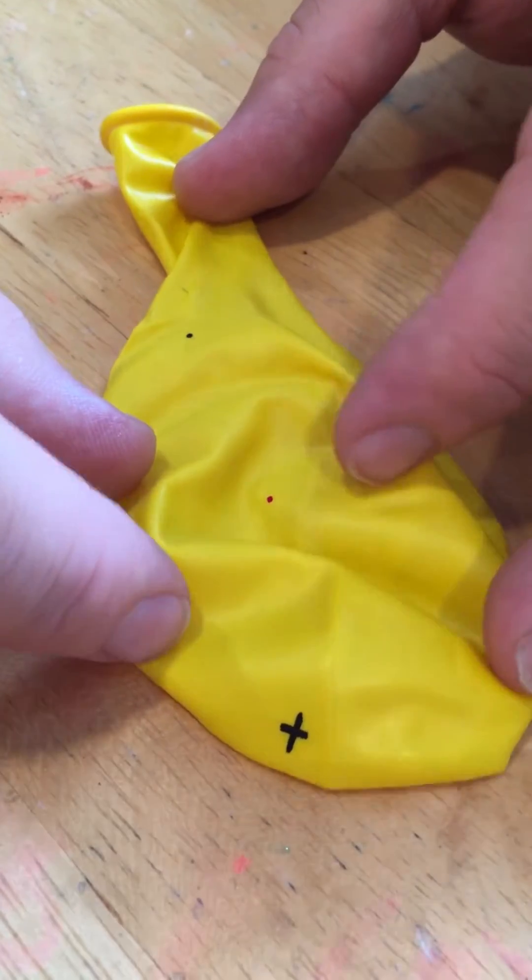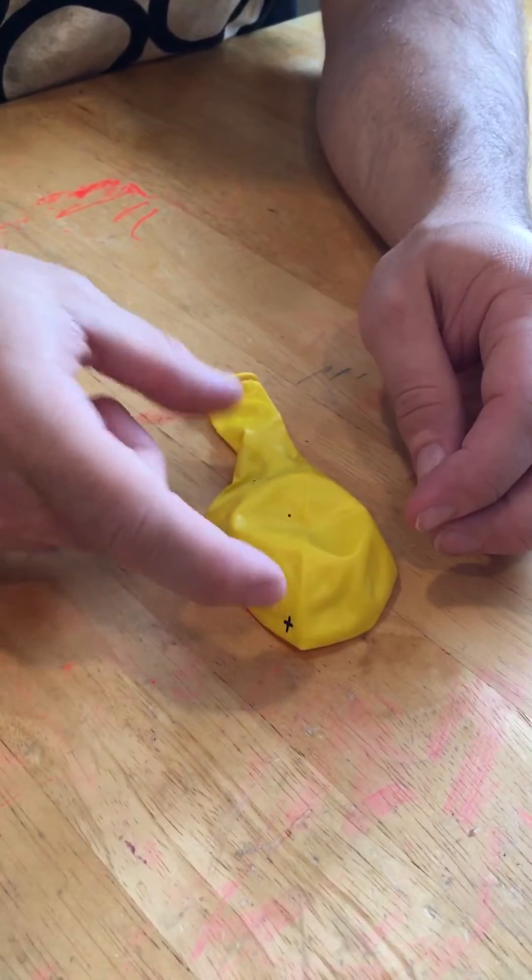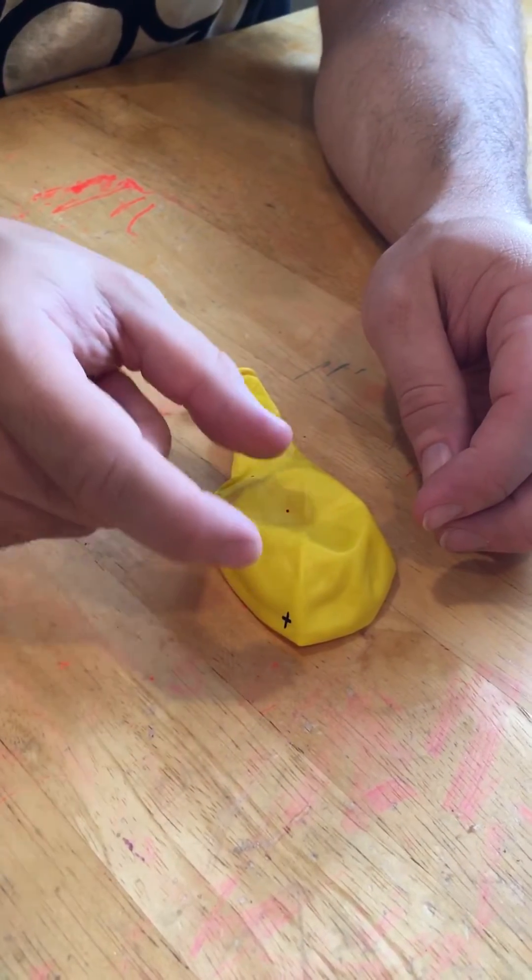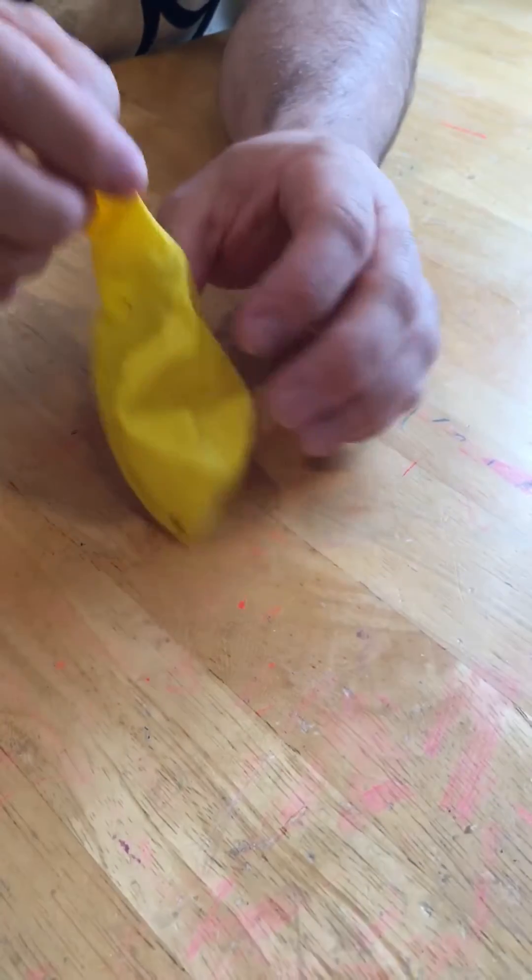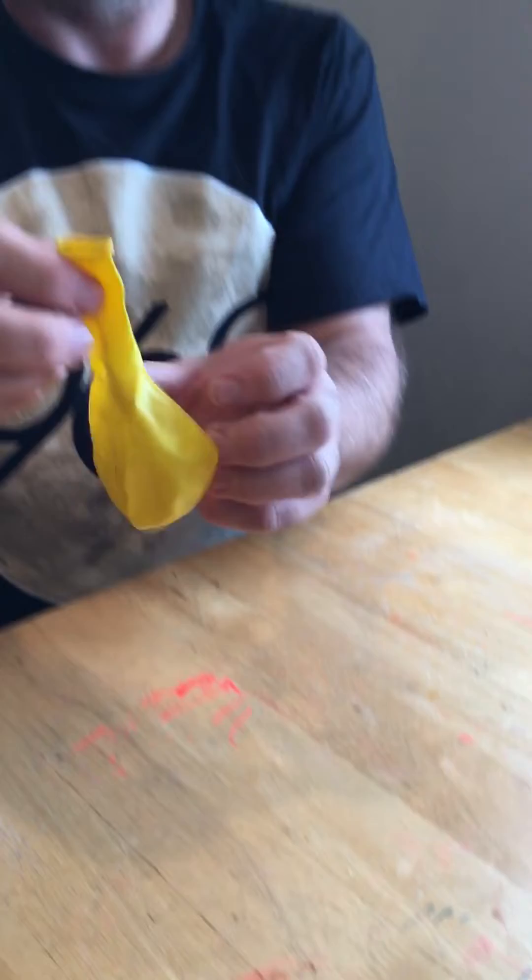Especially for the older kids, I would consider getting a cloth tape measure so that you can measure how far apart the blue dot is from the X and how far the red dot is from the X. This is in its unexpanded state and now what we're going to do is blow up the balloon.